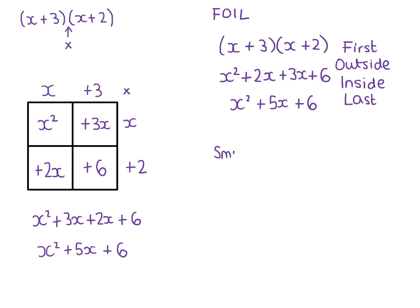Your third method is the one that I call the smiley face method, because it looks a little bit like a smiley face when you've drawn it. So there's our brackets again. And what we need to do is we need to multiply x by x. That gives us x squared. We need to multiply 3 by 2, so that gives us positive 6.